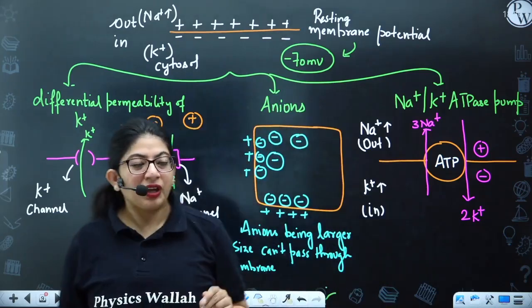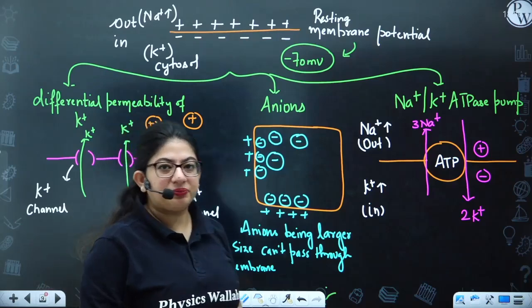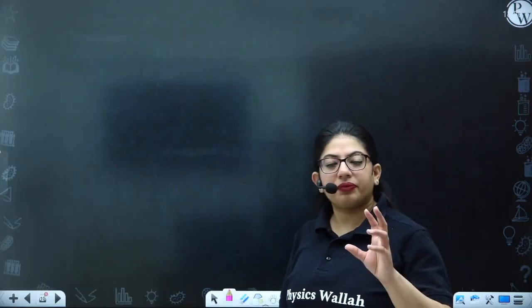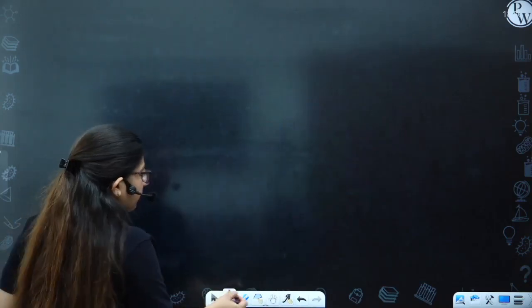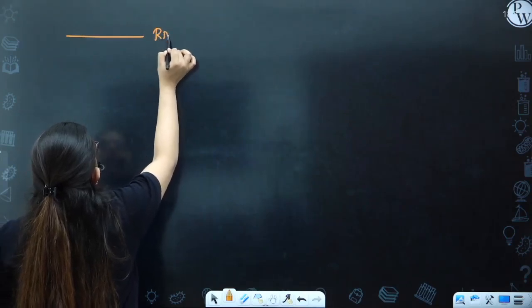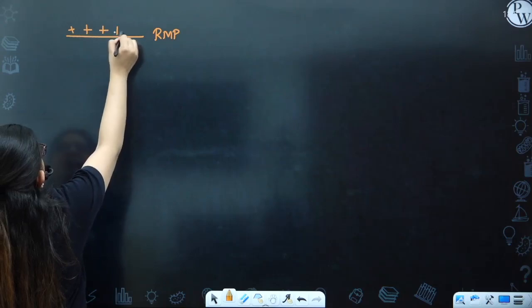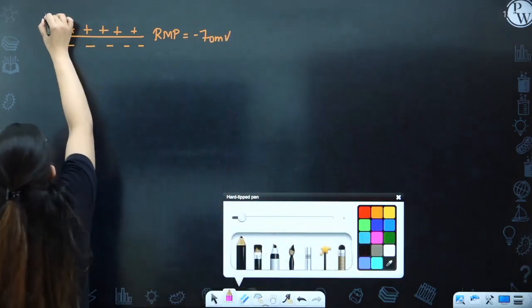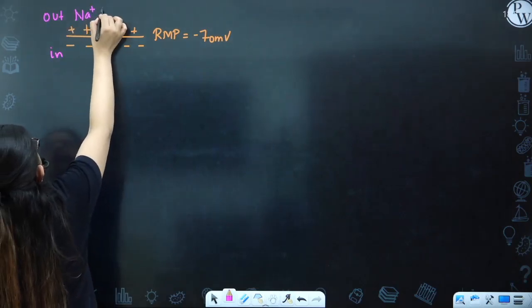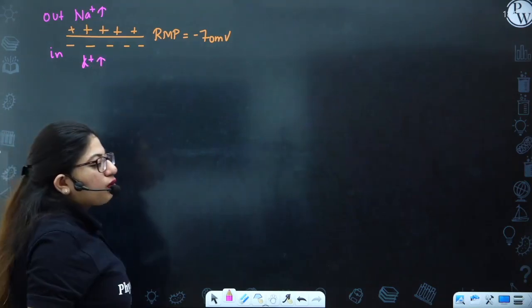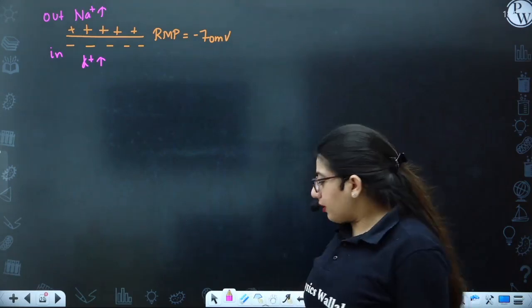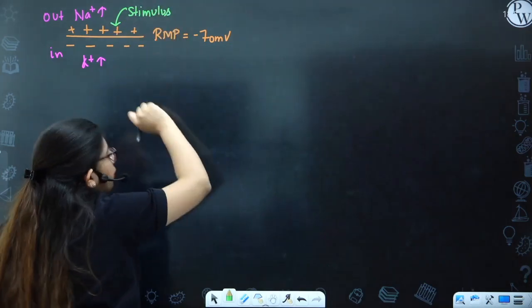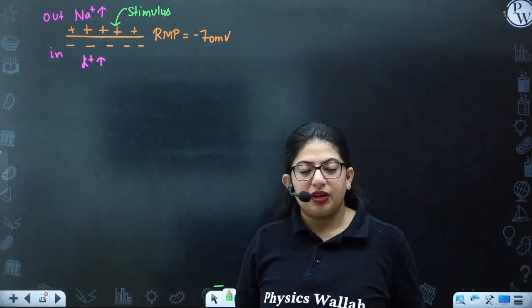If someone asks you the three reasons for minus 70 millivolt, you now have them. Now, how is the electric impulse generated? The story starts from the resting membrane potential. Outside has positive charge and inside has negative charge — across the membrane, there is minus 70 millivolt. Outside sodium ion concentration is higher in the extracellular fluid, and inside the cytosol, potassium ion concentration is more. When a stimulus arrives, for example touching someone, a change in environment occurs.